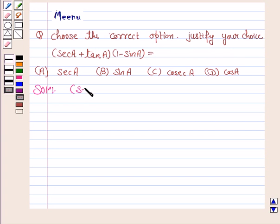The given expression is secant A plus tan A into 1 minus sin A. Now we will simplify this expression.